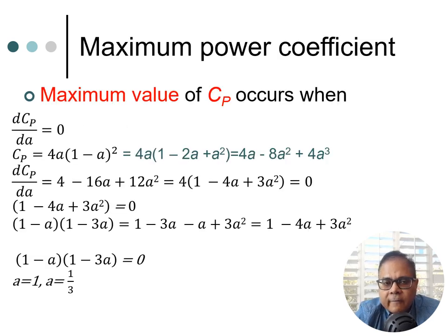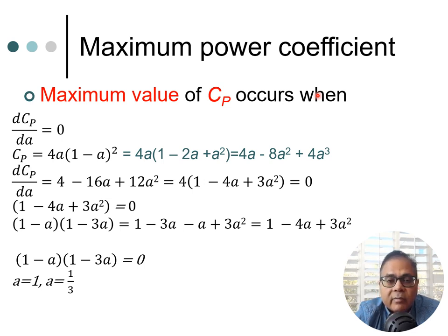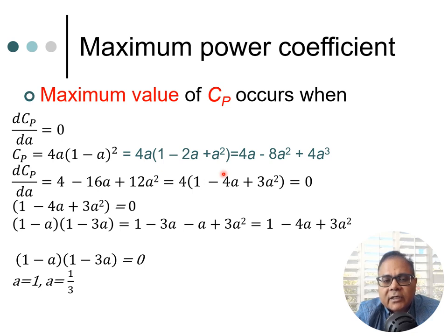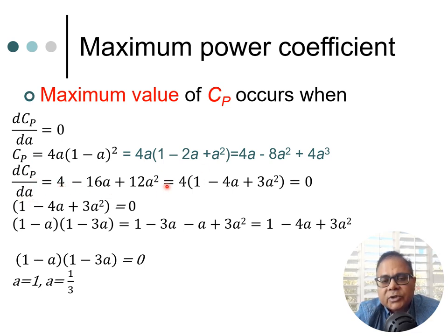To find the maximum C_p we use calculus — differentiate and set equal to zero, then examine the second derivative to determine whether the stationary point is a minimum or maximum. Expanding C_p: 4a times (1 minus a) squared gives 4a minus 8a squared plus 4a cubed. Taking the derivative dC_p/da gives 4 minus 16a plus 12a squared.